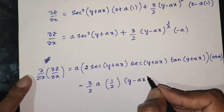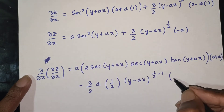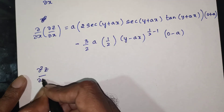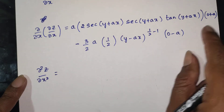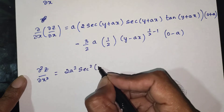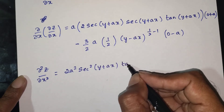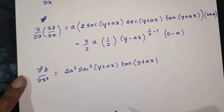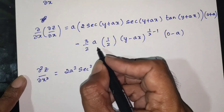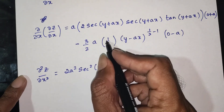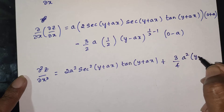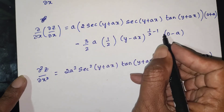Completing ∂²z/∂x²: the second term involves differentiating (y - ax)^(1/2) with respect to x. The derivative of y - ax is -a, so we get (3/2)·(1/2)·(-a)·(y - ax)^(-1/2) times (-a), which gives (3a²/4)·(y - ax)^(-1/2). Therefore ∂²z/∂x² = 2a²·sec²(y + ax)·tan(y + ax) + (3a²/4)·(y - ax)^(-1/2).